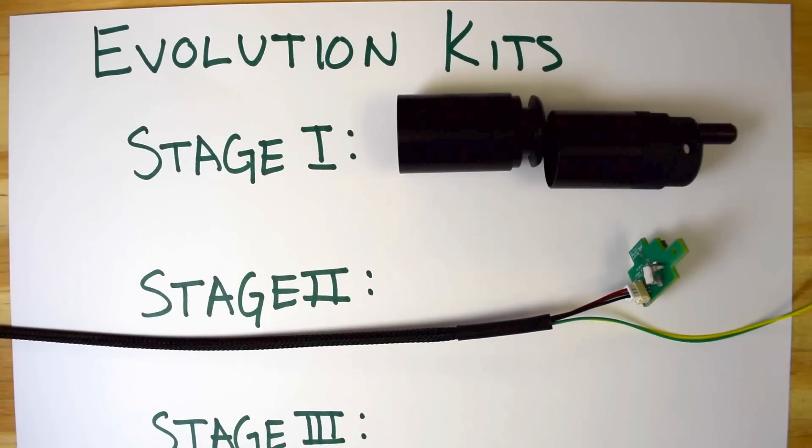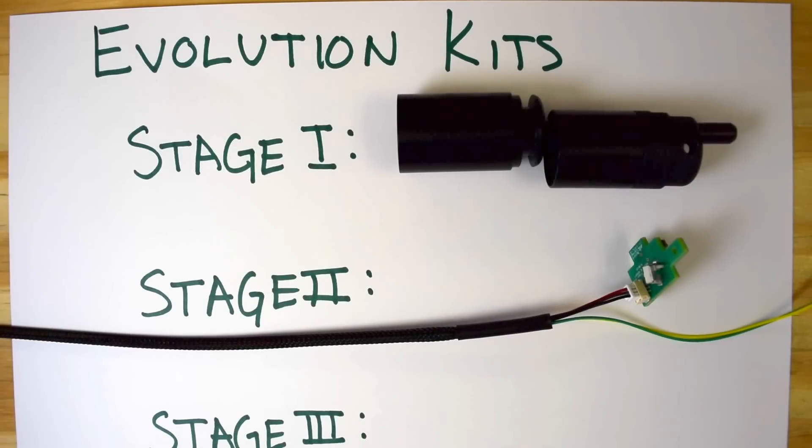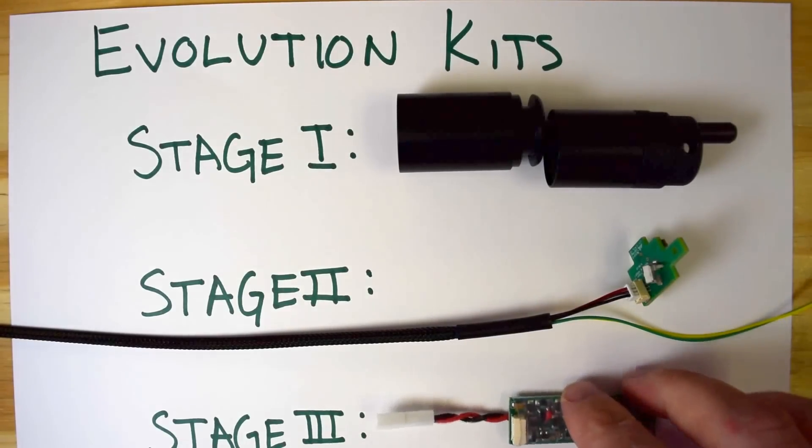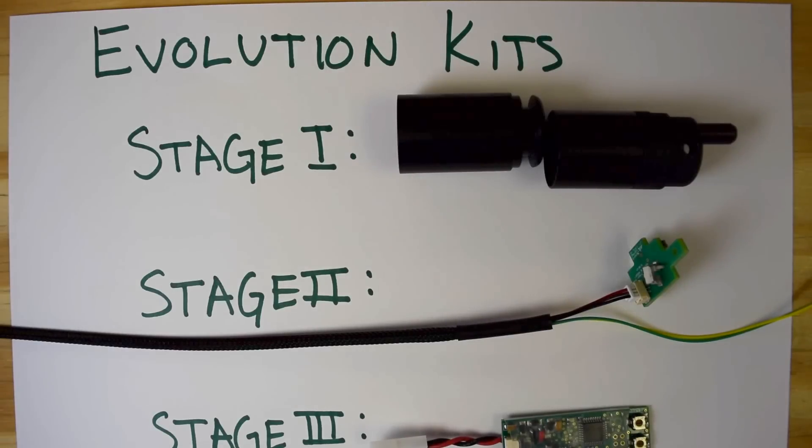So, in this case, this is a V2 trigger board and wire harness. A stage three kit will include all of that plus an FCU.